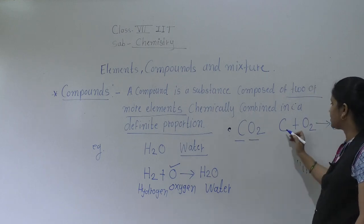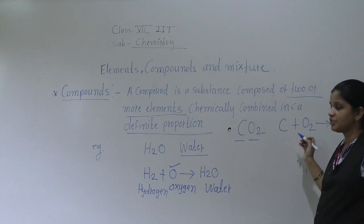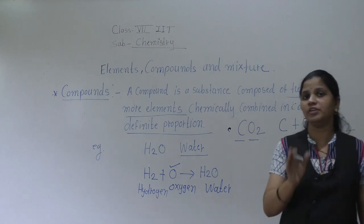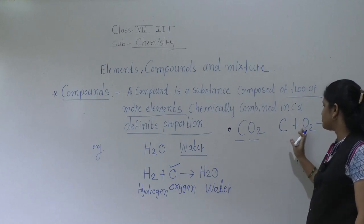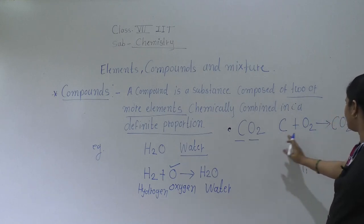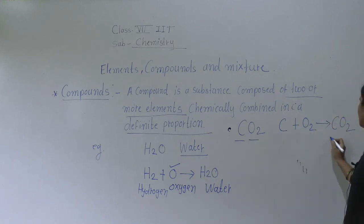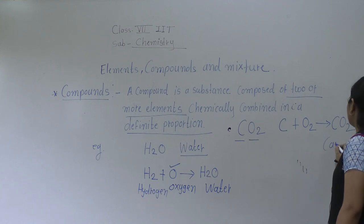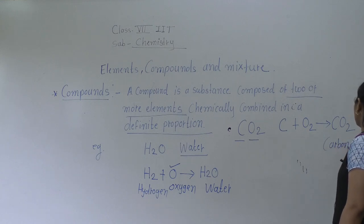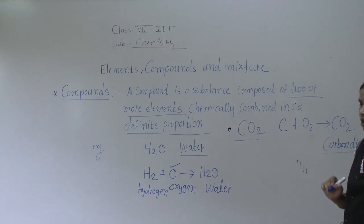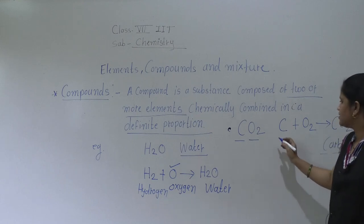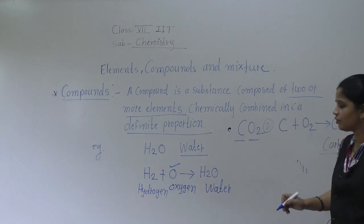Oxygen — two atoms, and carbon — one atom. It is formed in a fixed ratio, a definite proportion. Two atoms of oxygen and one atom of carbon form CO2, which means carbon dioxide. Carbon dioxide: this one is carbon and this is oxygen. This is the second example.